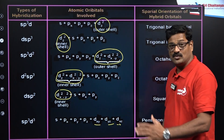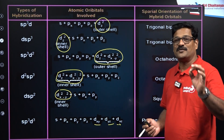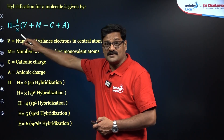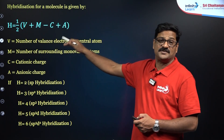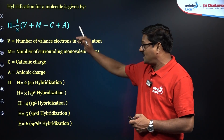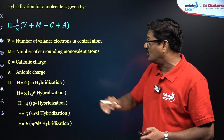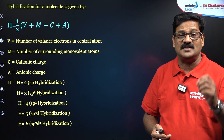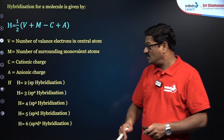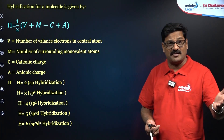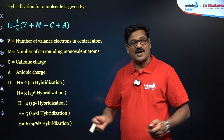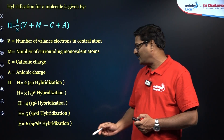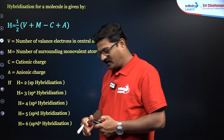Here is a simple formula to calculate hybridization. The number of hybrid orbitals H equals half of (V + M ± C or A), where V is the valence electrons of the central atom, M is the number of monovalent atoms, C is the charge on the cation, and A is the charge on the anion. If H = 2: SP; H = 3: SP2; H = 4: SP3; H = 5: SP3D; H = 6: SP3D2.